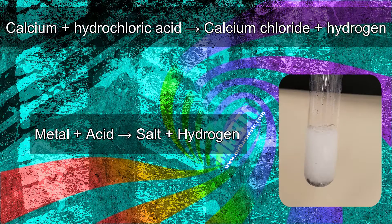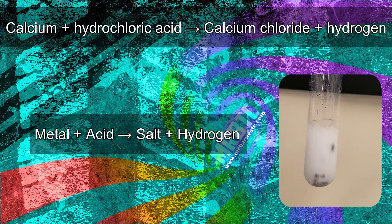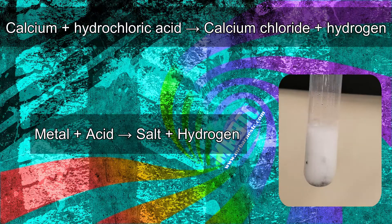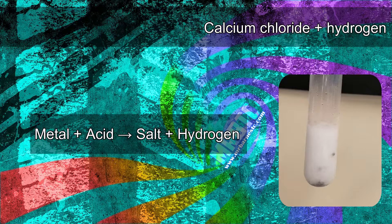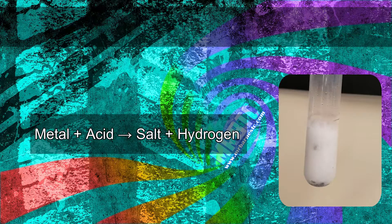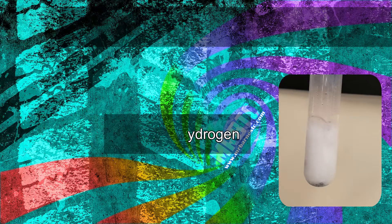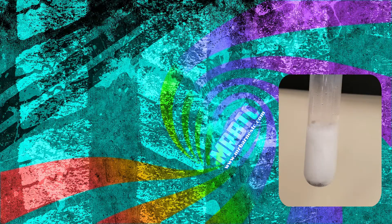What we're going to do is talk about how you can take any reactants — so calcium and hydrochloric acid, lithium and nitric acid, potassium and sulfuric acid — and work out what the products are. Once we've done that, we're going to look in slightly more detail at how you can write the balanced equations for it.